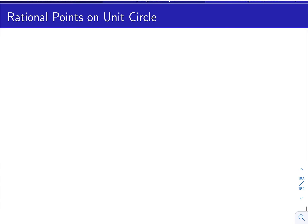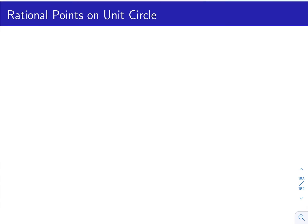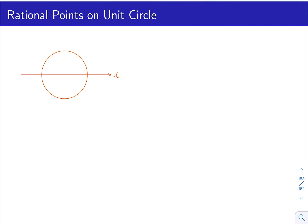Now we're going to look at a totally different problem: rational points on the unit circle. The unit circle is a circle with radius 1, and its equation is x squared plus y squared equals 1.